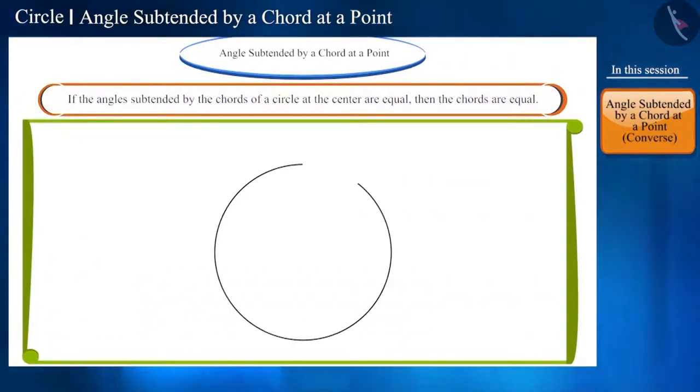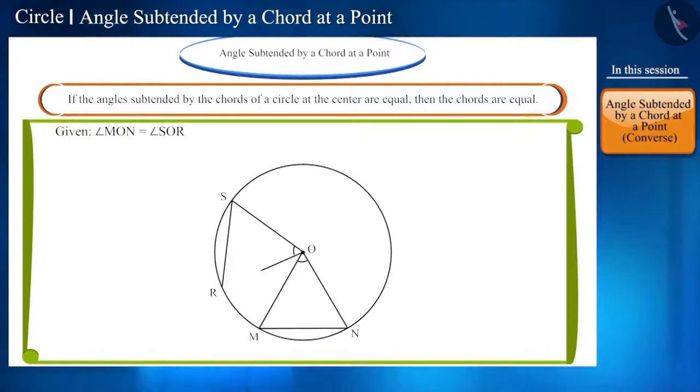Let's draw a circle whose center is O. We are given that angles M-O-N and S-O-R subtended by chords M-N and S-R respectively at center O are equal. Now, prove that chords M-N and S-R are equal. Friends, how can we prove that these two chords are equal?